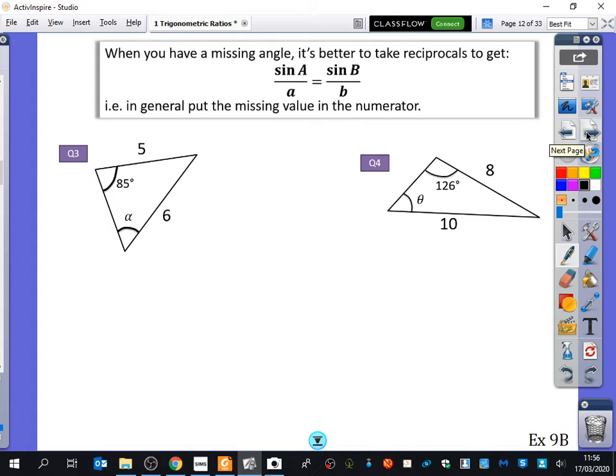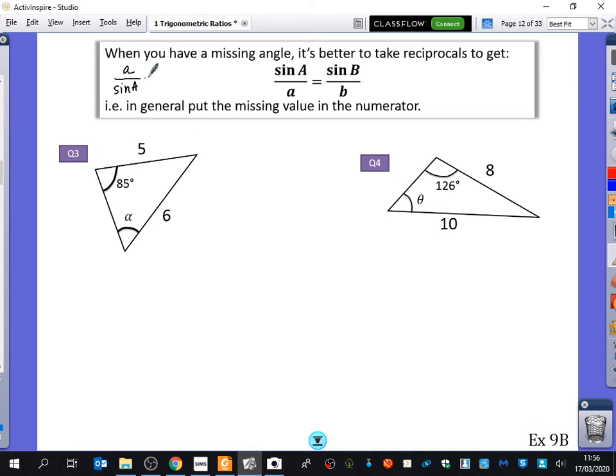Just, if you want to, it's usually better to take reciprocals of the formula if you have a missing angle instead. So, previously, we had a over sine A equals b over sine B. If we take reciprocals of this side and reciprocals of this side, you end up with that equation that we have over here. It tends just to be a bit easier. If you put the missing value that you want in the numerator, it all works out a little bit clearer. So, these are just two examples where I've got some missing angles instead.